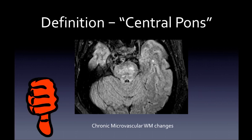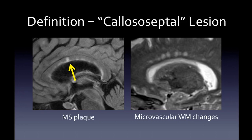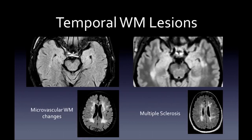The patchy central pons lesion seen with chronic microvascular ischemic changes is not good for MS — you want lesions confined to known white matter tracts. Two additional locations not in the McDonald criteria but more specific for MS: callosal-septal lesions, touching the callosal-septal interface (as opposed to microvascular changes that do not touch), and anterior temporal lobe white matter lesions. Severe microvascular changes tend to spare the anterior temporal lobe, whereas MS does not.